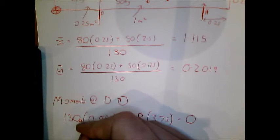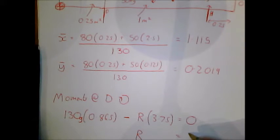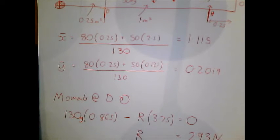So that needs to be a force, not a mass. So 130 G. 130 lots of 9.8 lots of 0.865 divided by 3.75. So that gives you a value of 293 Newtons.